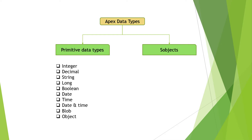The long data type is for storing long text data, similar to the long text area on the admin side. The boolean data type stores true or false values — for example, yes or no. If we need to capture a single binary value like male or female, we can use the boolean data type.